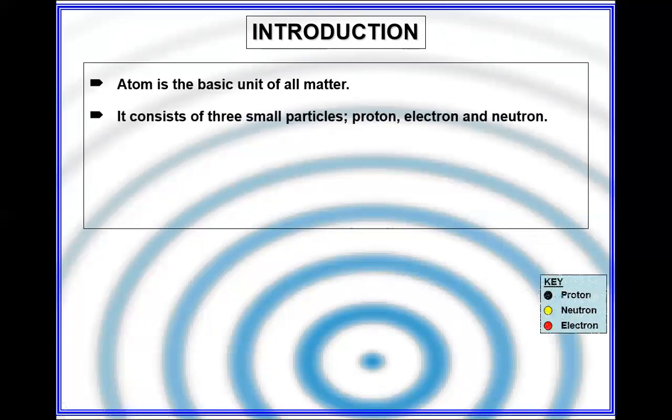If we look at any element, whether atomic number 1 or atomic number 20, in that particular element we have three fundamental particles: electron, proton, and neutron.